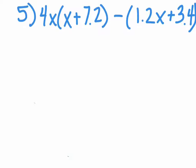Now we're going to do numbers 5 and 6. Simplify by multiplying, performing the distributive property, and combining like terms.